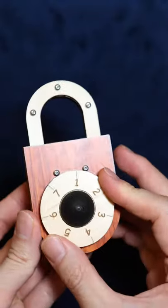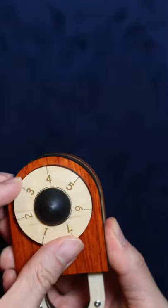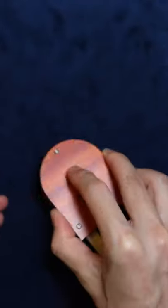The first mechanism is to find the correct combination, then flip it over to find a position where the metal pole cannot be pushed into the body of the lock. Finally, give it a few gentle taps.